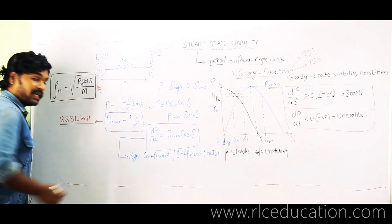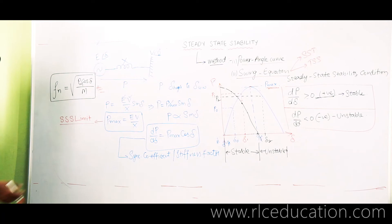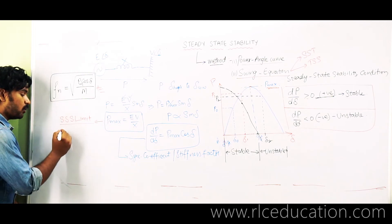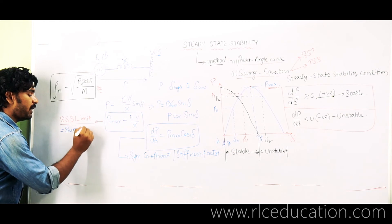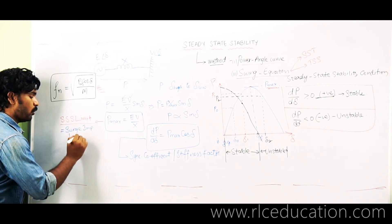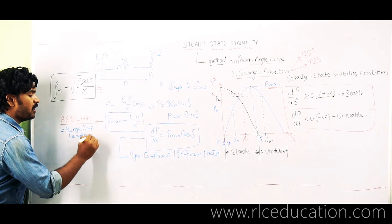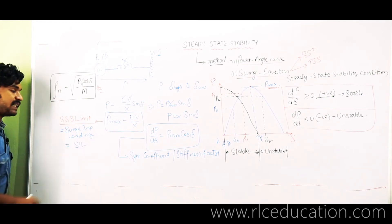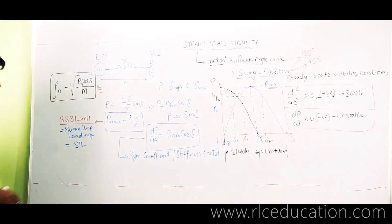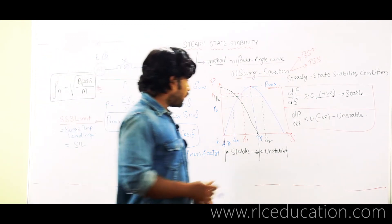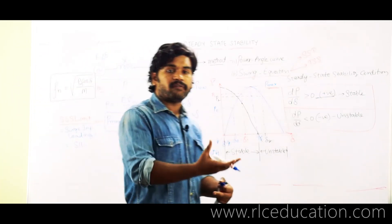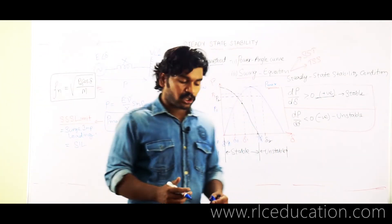The steady state stability limit is the maximum power that can be transferred without losing stability in the power system. Practically, this steady state stability limit is equal to the surge impedance loading (SIL) of the power system. So the steady state stability limit equals SIL — surge impedance loading — practically.